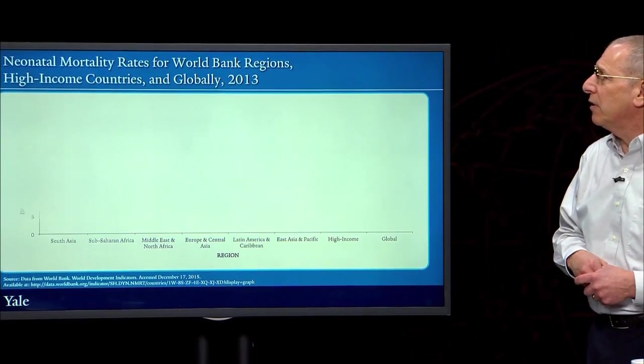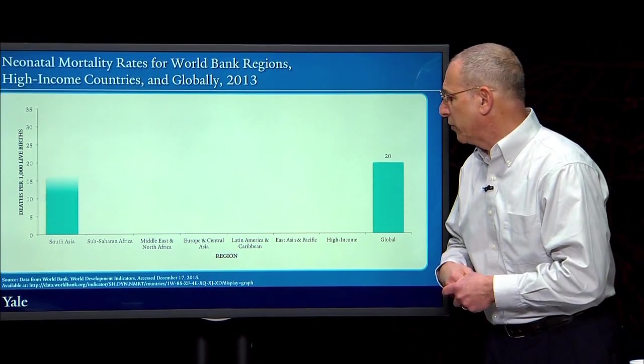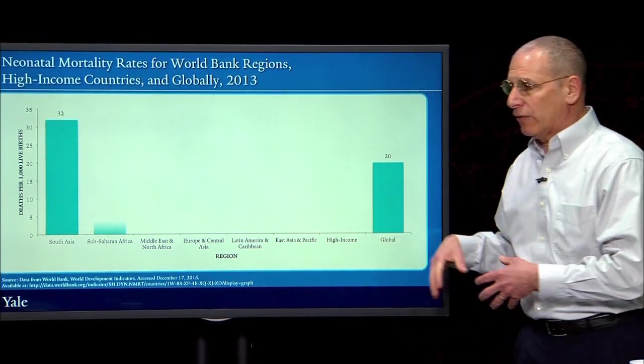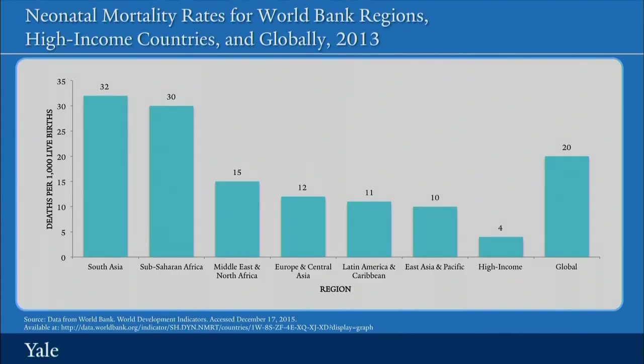Let's look now at the neonatal mortality rate for World Bank regions, high-income countries, and globally. Vivek, what should we take from this slide? There's a similar trend — South Asia and sub-Saharan Africa have significantly higher rates of neonatal mortality. In sub-Saharan Africa it's more than seven times, and in South Asia it's about eight times the rate of high-income countries.